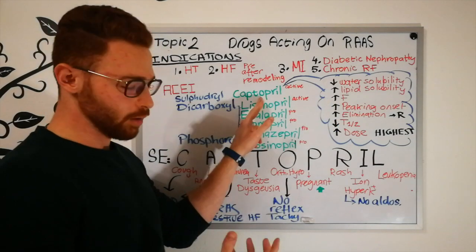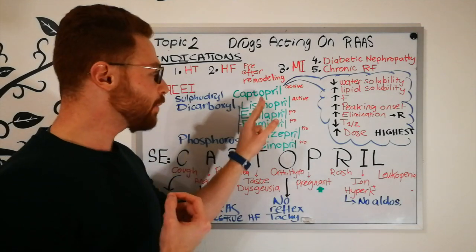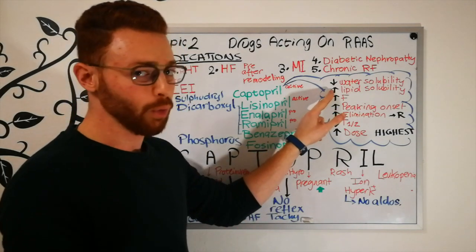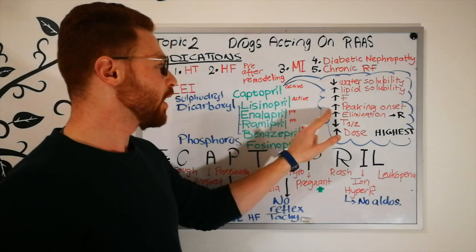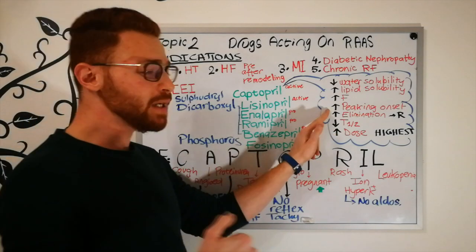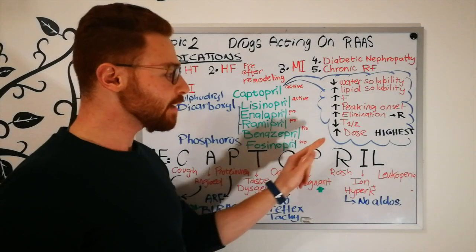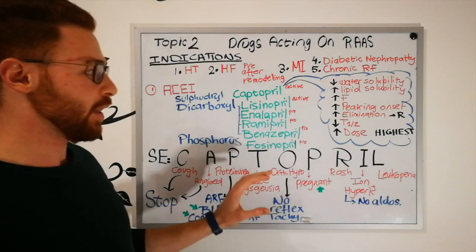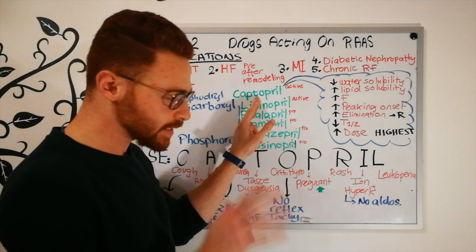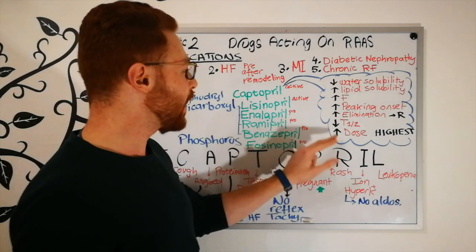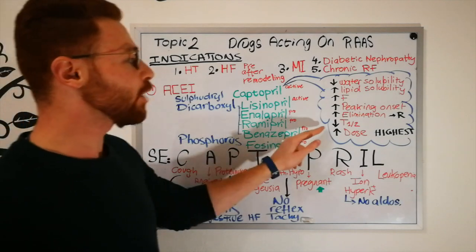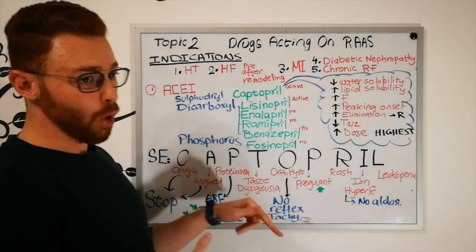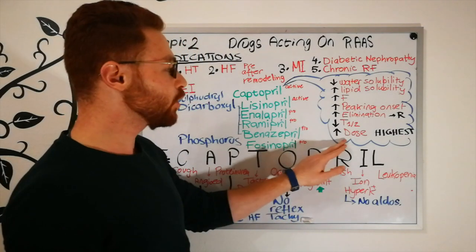Because of its higher lipid solubility, captopril achieves higher systemic concentrations after oral dosing. It peaks in the blood faster and is eliminated faster than the others, exclusively via renal excretion into urine, giving it a shorter half-life. Despite its higher oral bioavailability, captopril requires the highest dosage compared to all other ACE inhibitors.